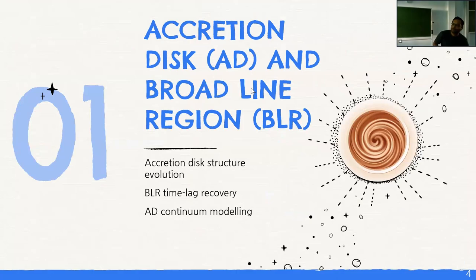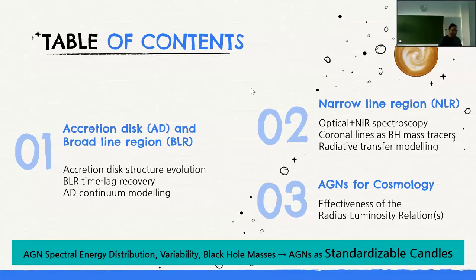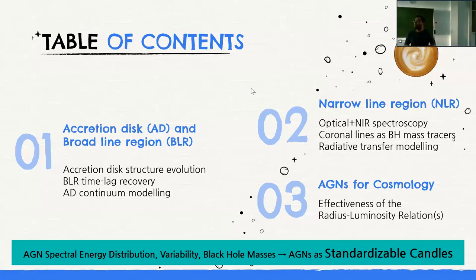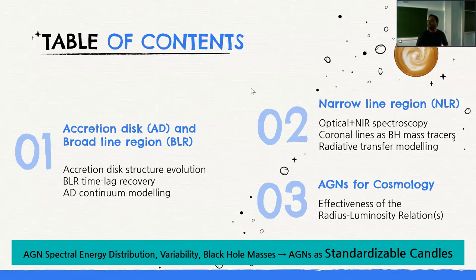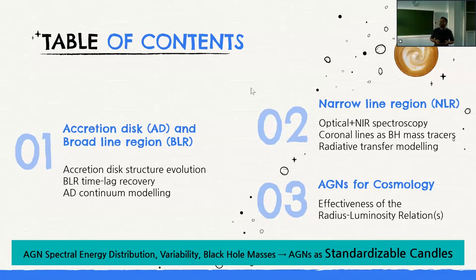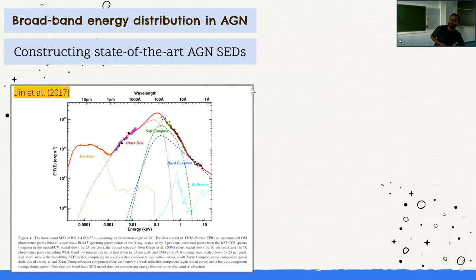Today my intention is to explore SED modeling, then in the second part focus on the narrow line region — showing optical and near-infrared spectroscopy and a novel method using coronal lines as black hole mass tracers, which will be very useful with upcoming JWST data. I'll conclude by discussing how AGN can be used as cosmological candles, through more effective radius-luminosity relations. The talk covers AGN SED, variability, black hole mass determination, and AGN as standardizable candles.